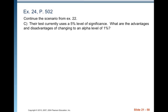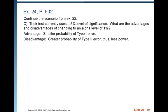Their test currently uses a 5% significance level. What are the advantages and disadvantages of changing to an alpha level of 1%? The advantage would be a smaller probability of Type 1 error. The disadvantage is a greater probability of Type 2 error and thus less power. Making your alpha smaller decreases the probability of a Type 1 error but increases the probability of a Type 2 error and makes your test less powerful.